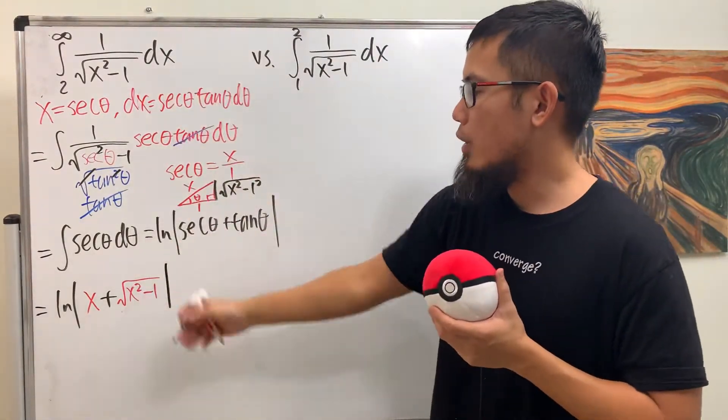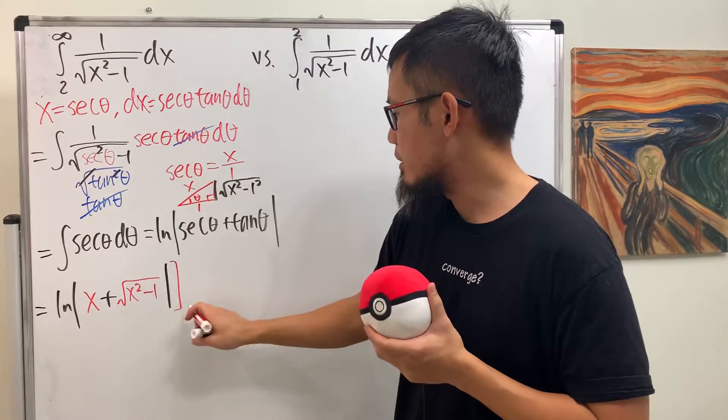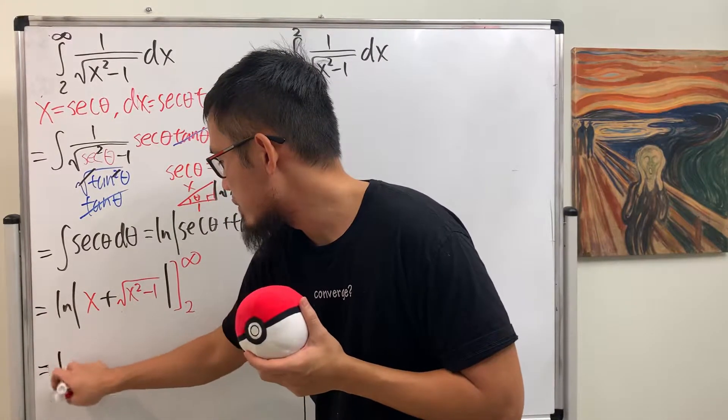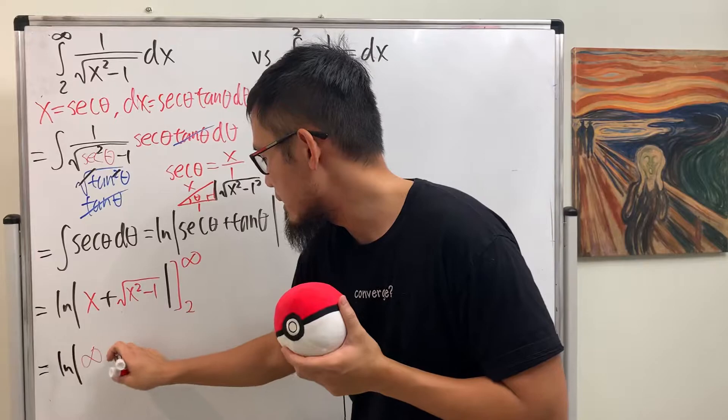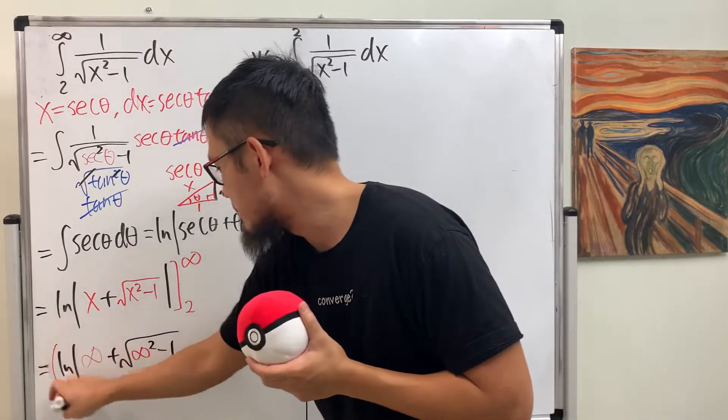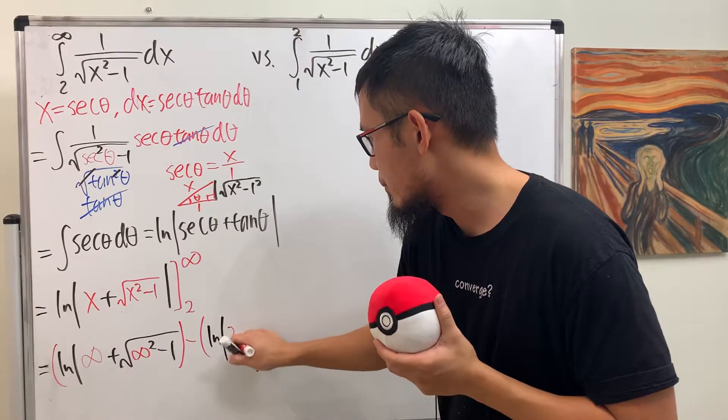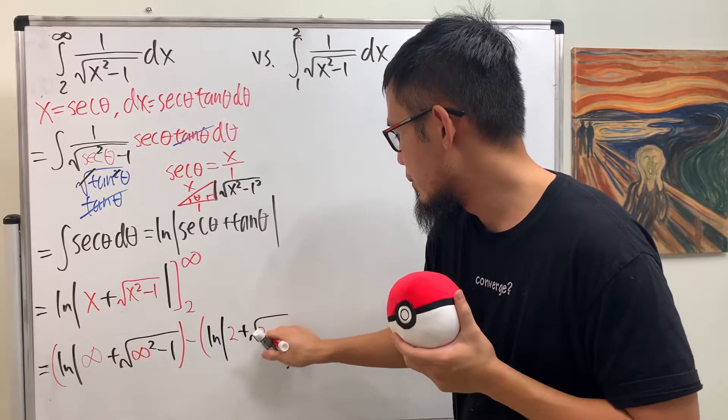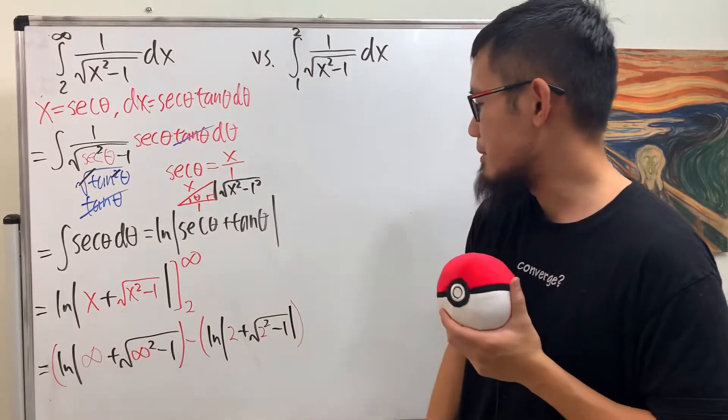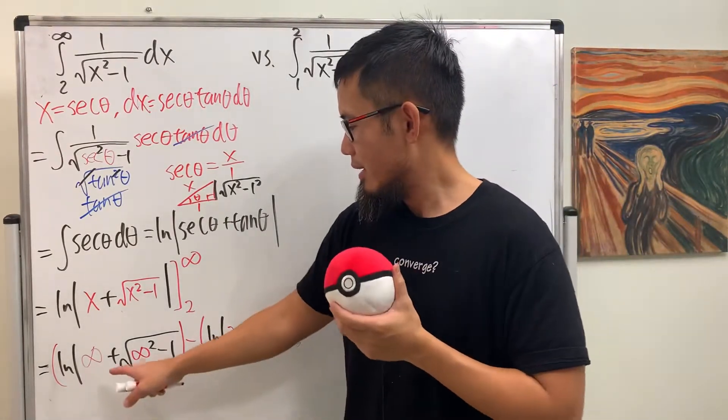All right, so that's actually our answer for that integration, and then we just have to plug in numbers. We are going to plug in 2 and then infinity. Well, plug in infinity, here we get natural log of infinity plus square root of infinity squared, and then minus 1, so this right here is the first part. And then minus plug in 2 into x, we have ln absolute value 2 plus square root of 2 squared minus 1, just like that. This is infinity plus, this is infinity minus 1 is infinity, square root of infinity is infinity.